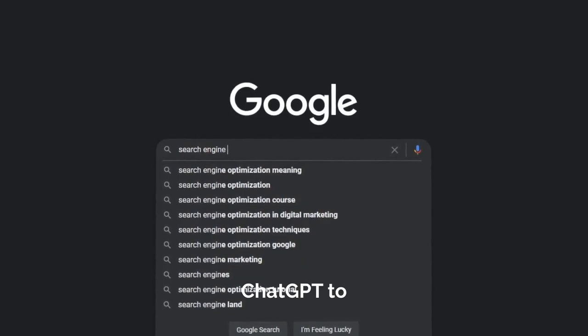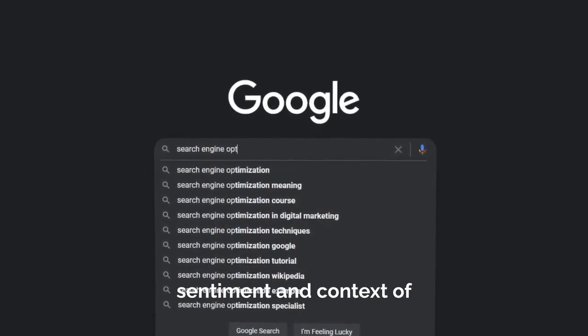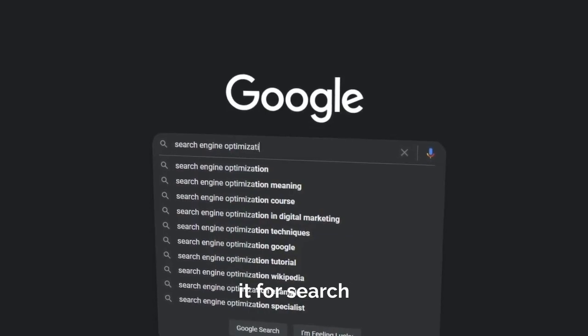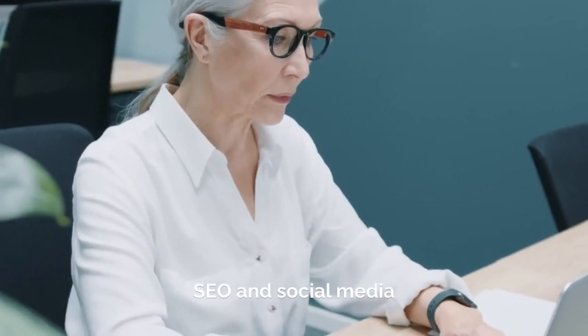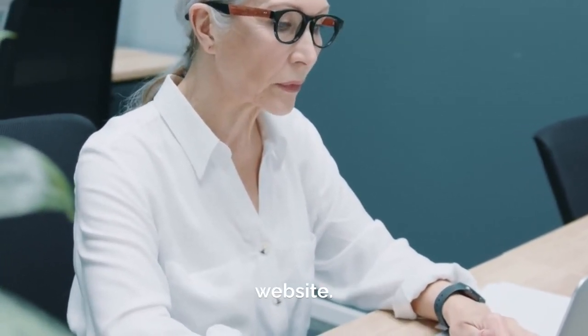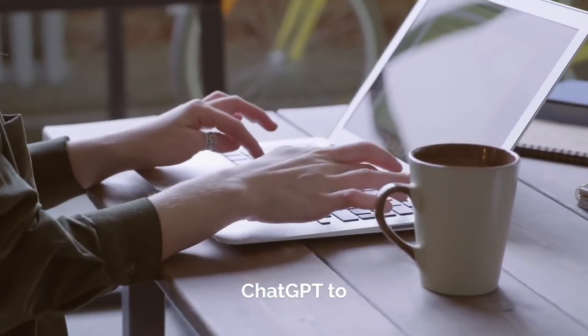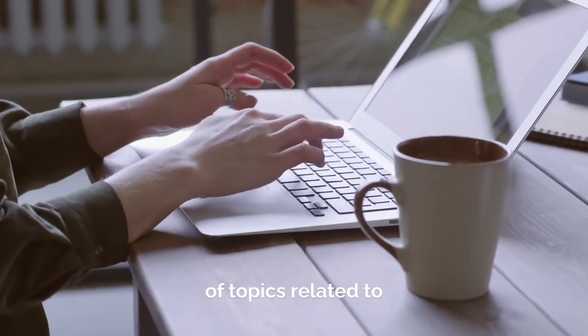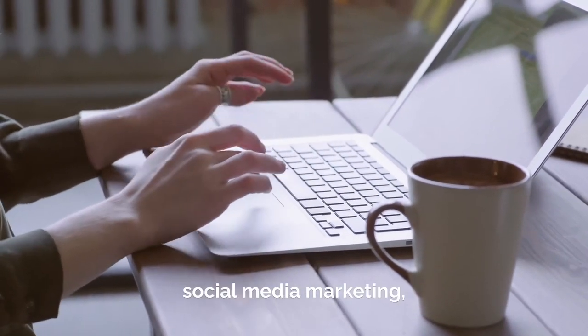You can use ChatGPT to understand the sentiment and context of your website's content and use that information to optimize it for search engines. Another way to use ChatGPT to become a SEO and social media expert is to use it to generate high-quality written content for your blog or website. You can use ChatGPT to write articles, news, or stories on a wide range of topics related to SEO and social media marketing, and publish them on your own website or on platforms like Medium or LinkedIn.